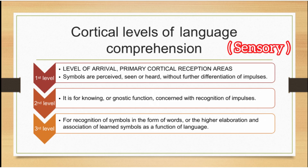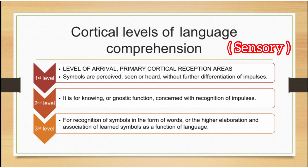There are three cortical levels of language comprehension, that is the sensory component of language. The first level is the level of arrival, which is the primary cortical reception area. Here the symbols are perceived, seen or heard, without further differentiation of the impulses.